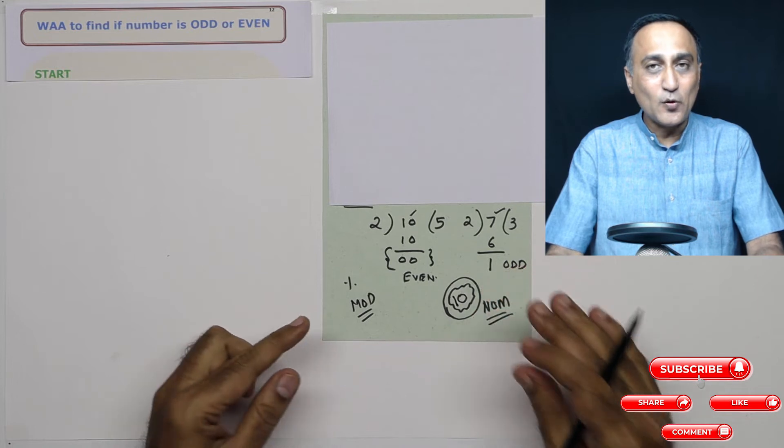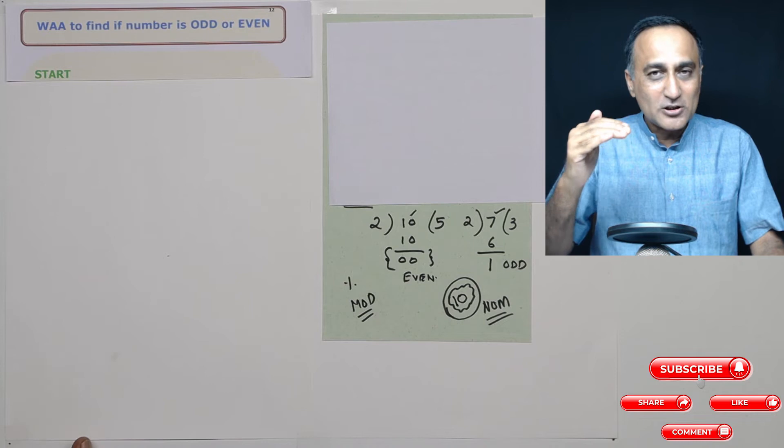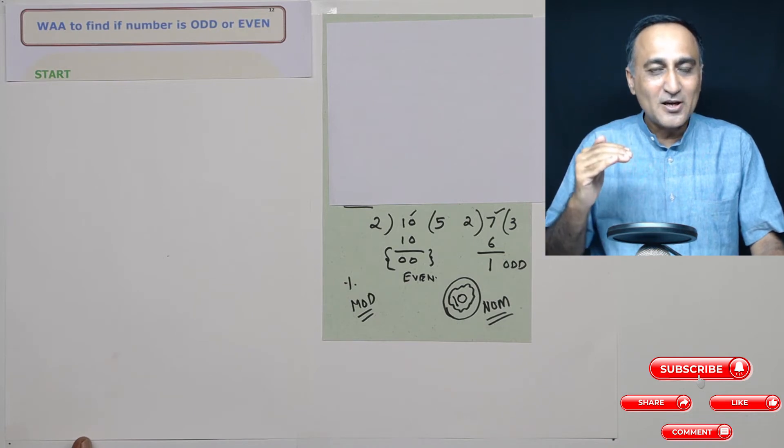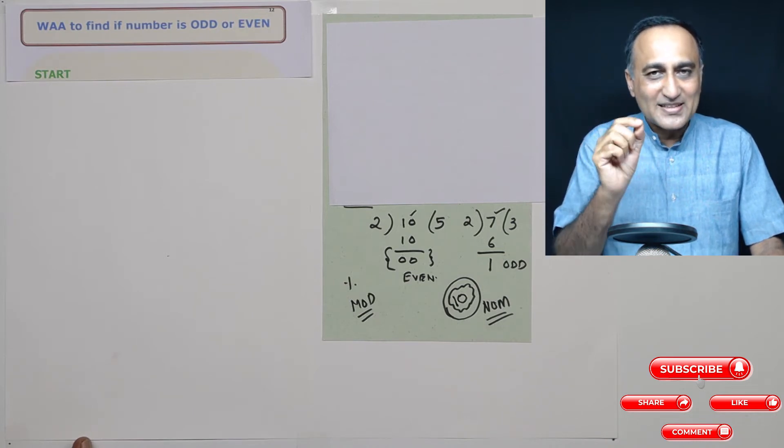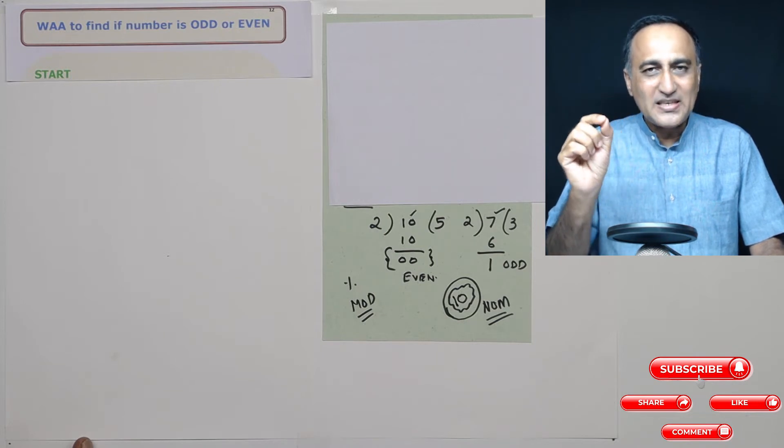Then here if you look, unlike the previous problem, here there are two possibilities, the number can be odd or the number can be even. So what I will do is I will say like this, if number mod two is equal to zero,